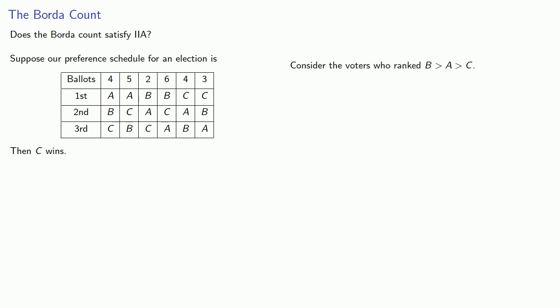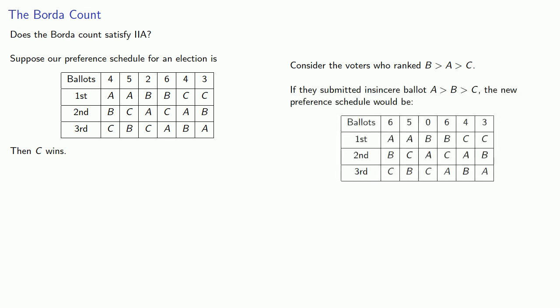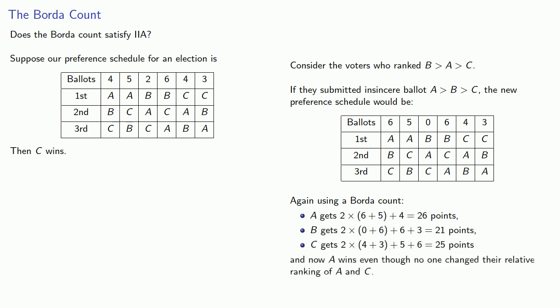Now, consider the voters who ranked B above A above C. They don't like the fact that C wins, and if they submitted insincere ballots A over B over C, the new preference schedule would be... And again, using a Borda count, we find... And now A wins, even though no one changed their relative ranking of A and C. These voters began ranking A over C, and they ended ranking A over C.